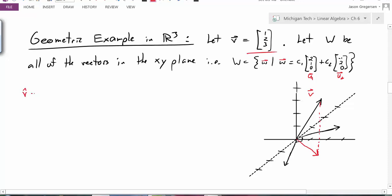We take v hat, and now it should be equal to the projection of our vector v onto our orthogonal basis. V onto u1 plus projection of v onto u2. So this should be v dot u1 over u1 dot u1 times the vector u1 plus v dot u2 over u2 dot u2 times the vector u2.